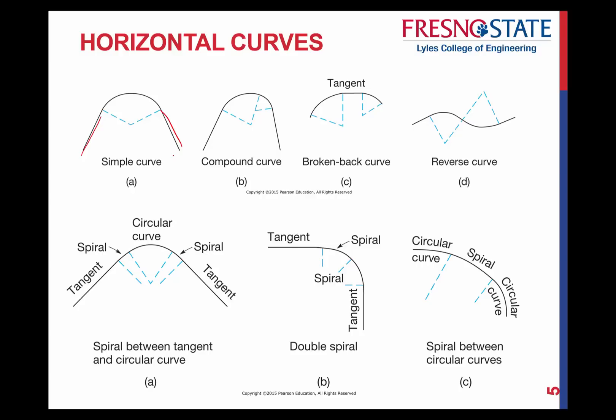Okay, a compound curve, then, is that you're still trying to connect two tangent sections over here. But the difference here is you've had two curves now. So you have this curve and this curve now where they're joining together. See, before with a simple curve, all you had was one curve joining the two tangent sections. So there's a compound curve.